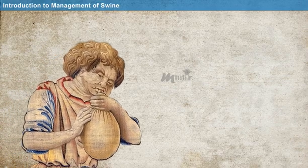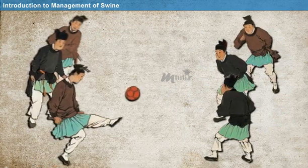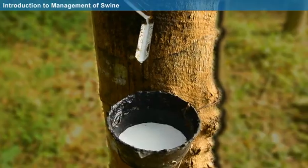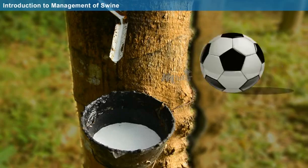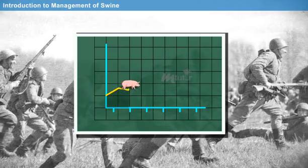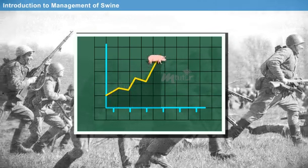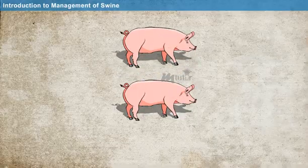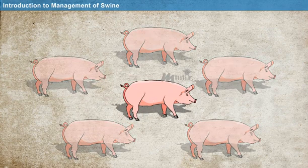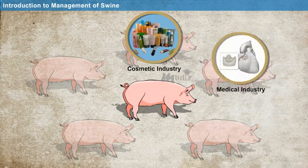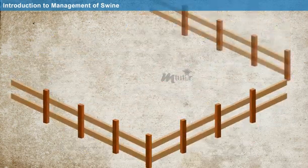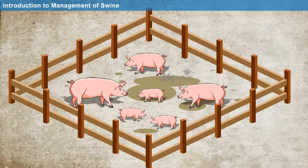Do you know? During early periods, pig bladders were inflated and used as soccer balls owing to their durability. However, after the advent of rubber, the use of pig bladders decreased, which in turn affected the commercial value of pig. After World War II, the commercial use of pig increased again due to an increase in food demand. Currently, pig is considered one of the important entities among various sectors such as the cosmetic industry, medical industry, pharmaceutical industry, food industry, agriculture, etc. Thus, it is evident that pig rearing ensures constant revenue.